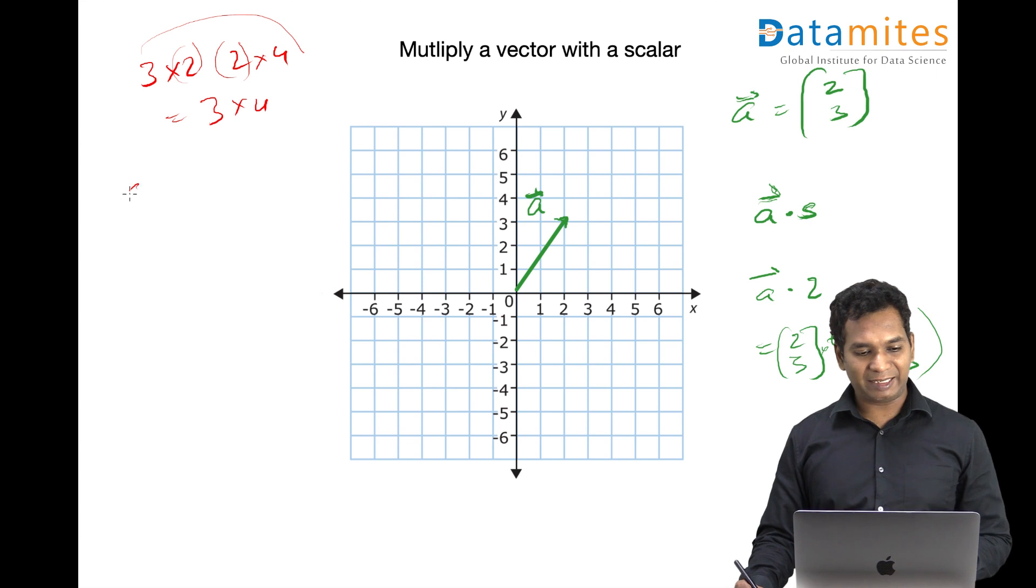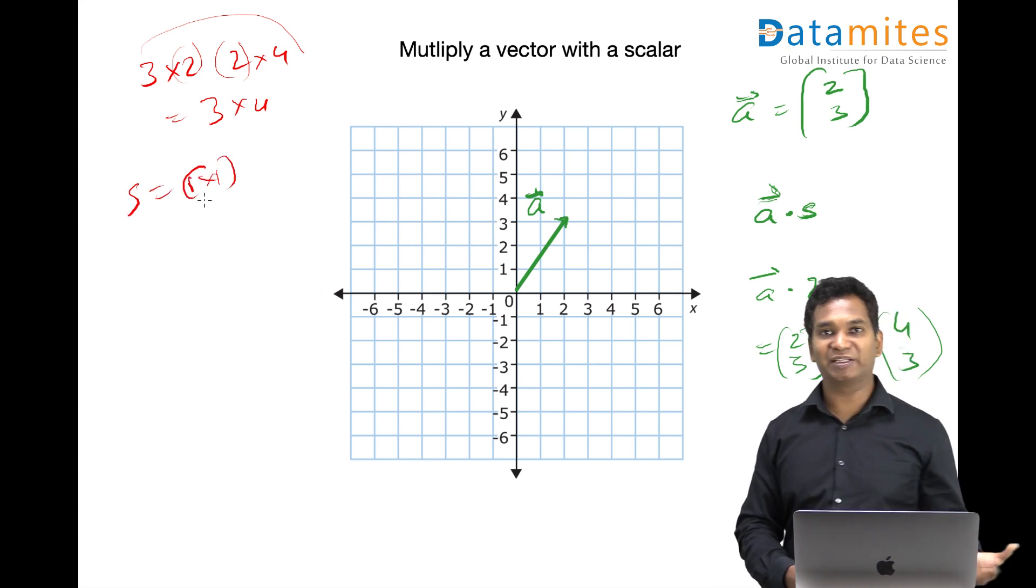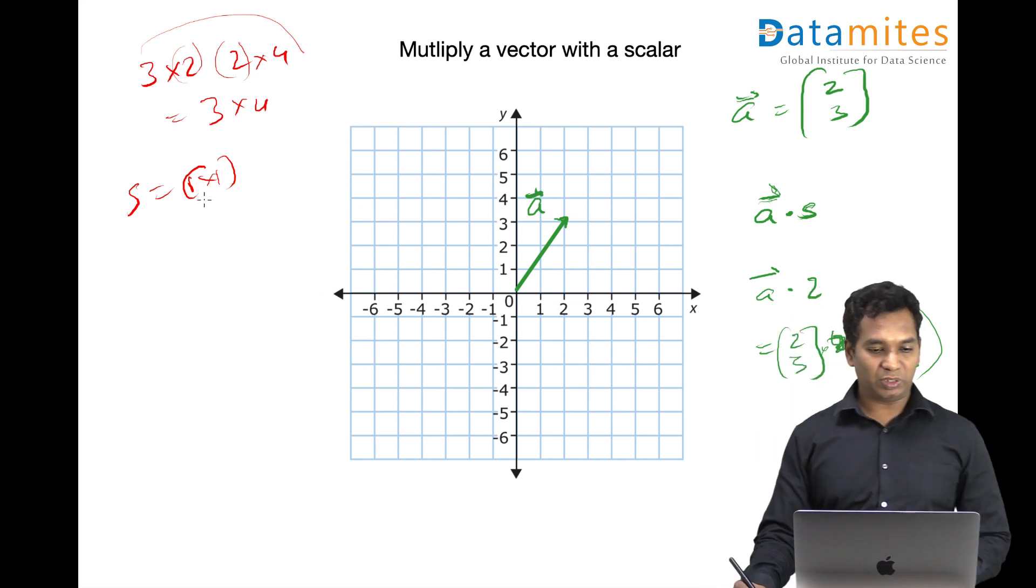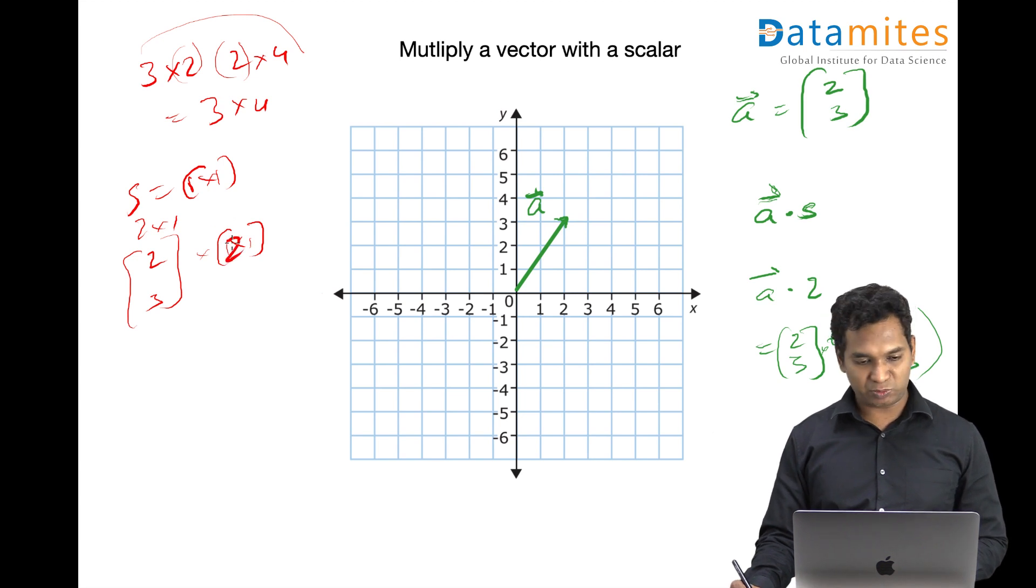In a similar manner, if you look at this, a scalar can be represented as 1 by 1 because it just has one row, one column. A vector is a column matrix. 2 comma 3 is actually 2 cross 1, and 1 cross 1 is your scalar 2. The resultant would be 2 cross 1, and this is possible.